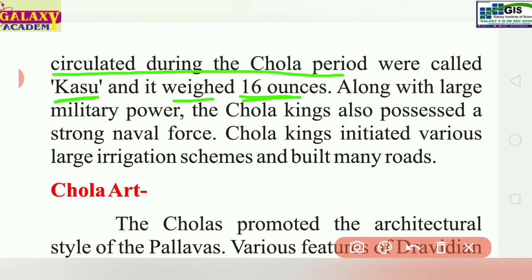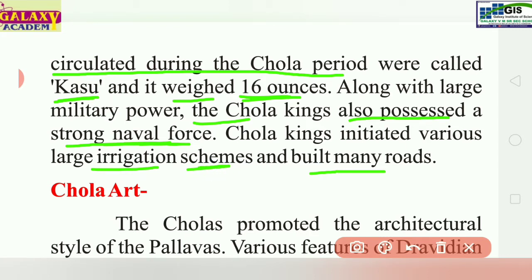The kasu gold coin weighed 16 ounces. Along with large military power, the Chola king also possessed a strong naval power. The Chola kings initiated various large irrigation schemes and built many roads.